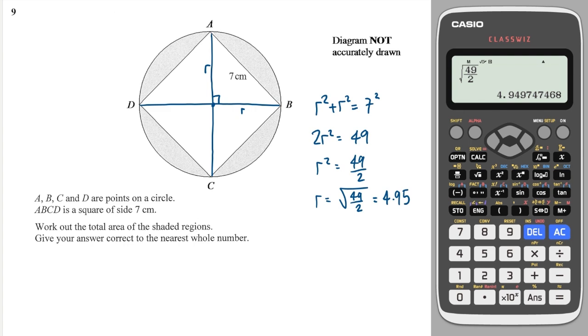So what I can now do is I can work out the area of the overall circle. So the area of the circle is equal to πr², which is equal to π times by 4.95². So I'm going to square this and then I'm going to times it by π. And that's going to give me 76.97.